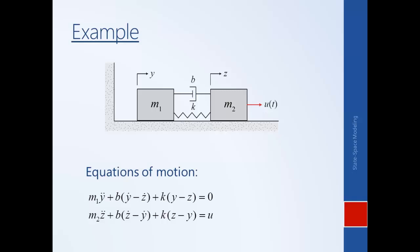Let's consider this example: a mass-spring-damper system. These are the equations of motion, which we know how to derive by drawing free body diagrams for each of the two masses and using Newton's second law. By inspection, this system of equations is not in state space form — each of the equations is a second order differential equation, with a second derivative of y or z as a function of itself and its first derivative.